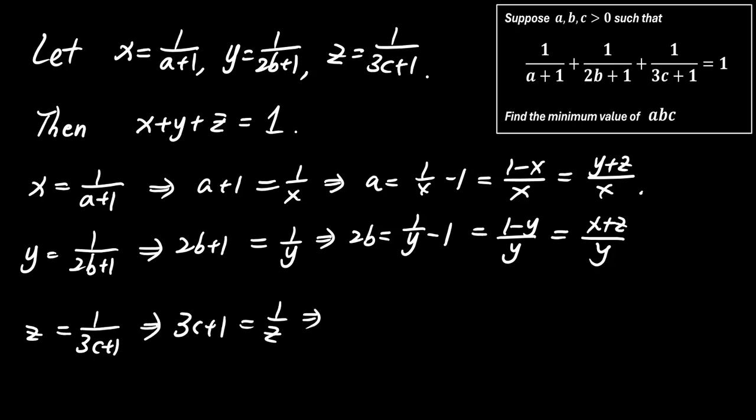Likewise, from Z equals 1 divided by 3C plus 1, we get 3C equals 1 minus Z divided by Z, which simplifies to X plus Y divided by Z.